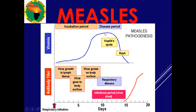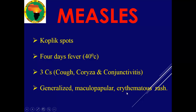At day 10 you will start seeing signs — the rash all over the body and the Koplik spots. At that time the body begins fabricating antibodies. By day 15 the antibodies start increasing in number to fight the virus and the virus starts disappearing, however by this period it will already have caused problems to many systems of the body.